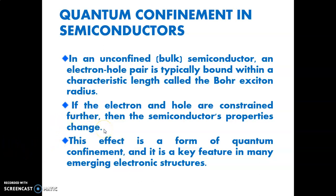If electron and holes are constrained further, the semiconductor properties are changed. When we are varying the radius of the electron or holes, when we are changing the confinement of the holes as well as the electron, the radius will be varying and the previous semiconductor properties will also be changed.